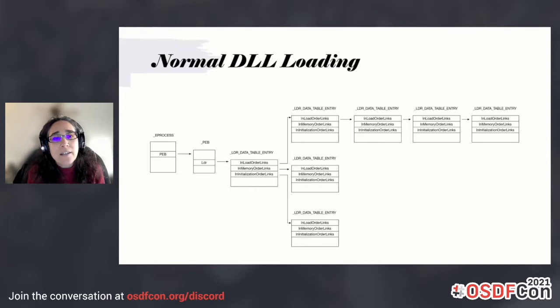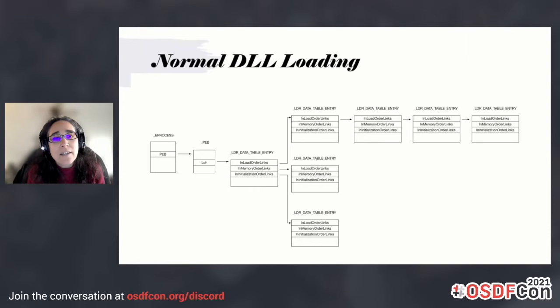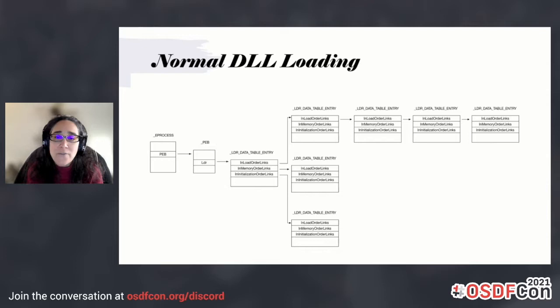When you have normal DLL loading, you have something that looks like this. You have your process, which has this pointer to all these different lists that contain information about the DLLs that are loaded. It's also loaded with page permissions of copy-on-write or read-only. This is something that's normal.